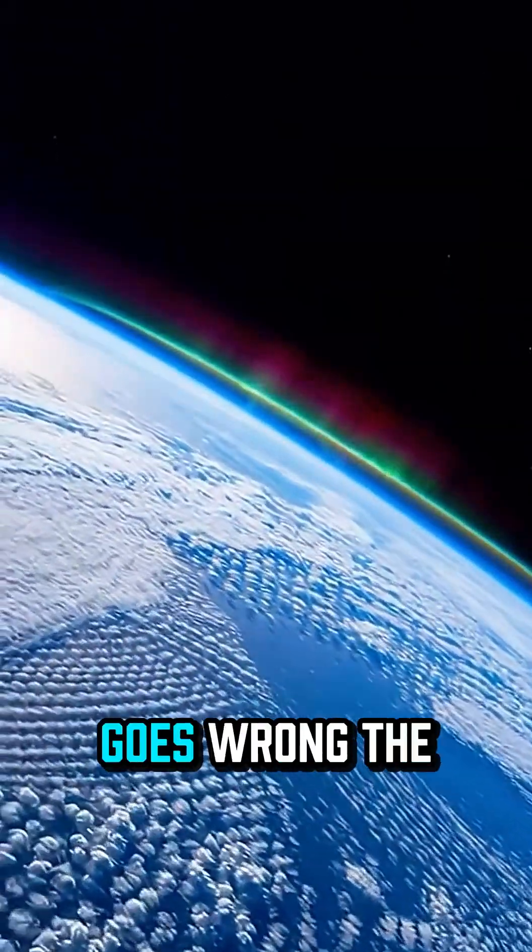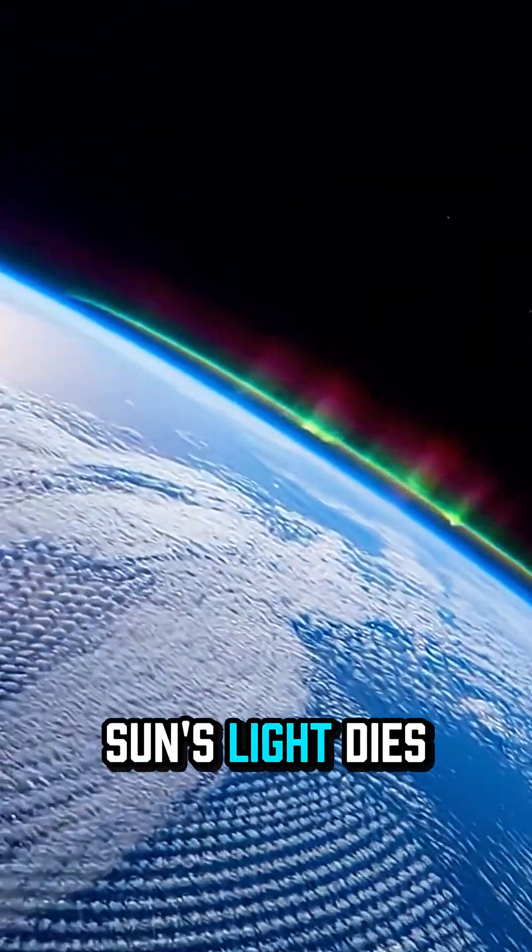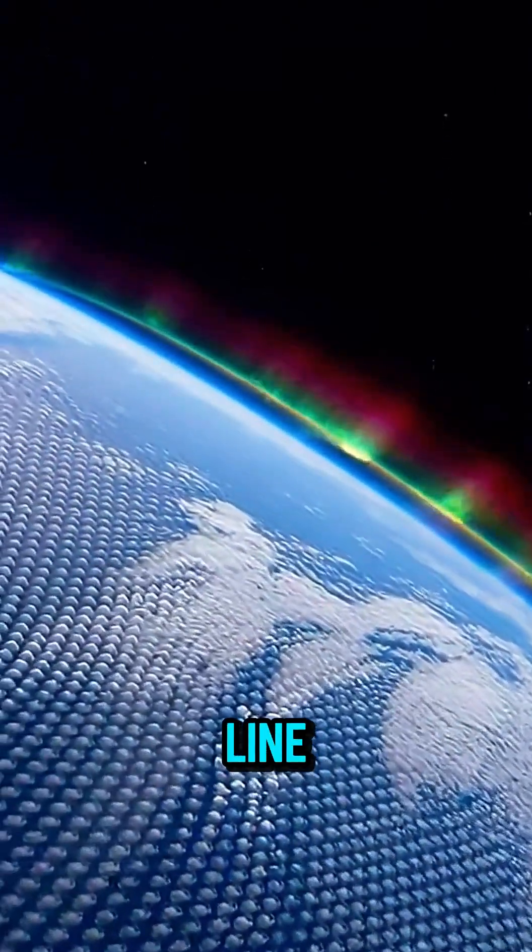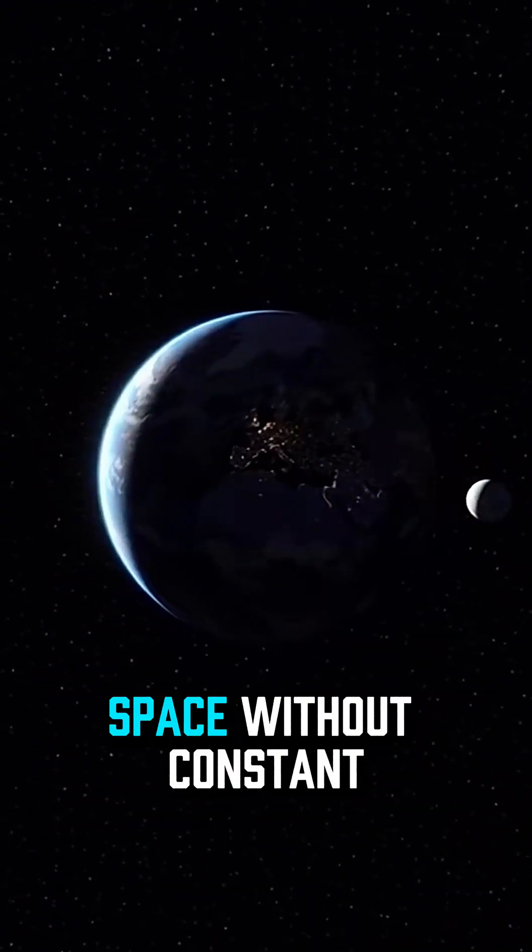Then the sky goes wrong. The sun's light dies and Earth stops orbiting. It keeps moving in a straight line, drifting into deep space.